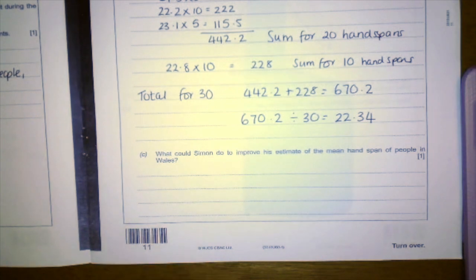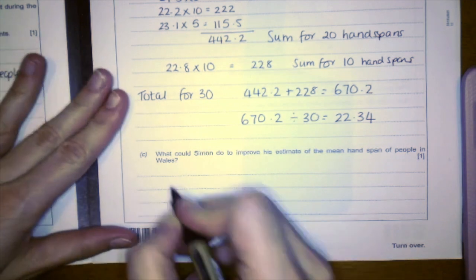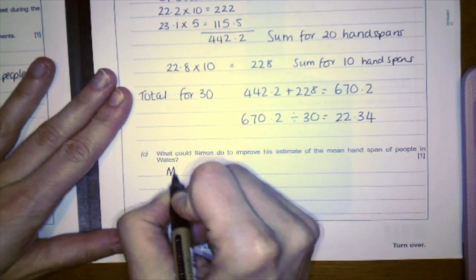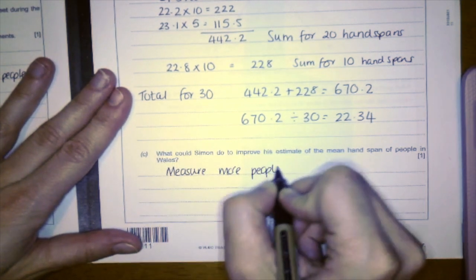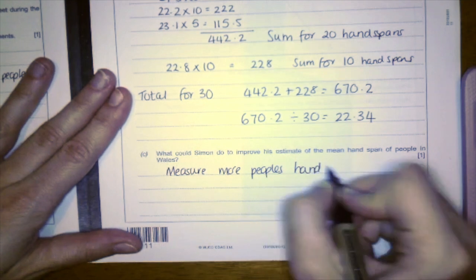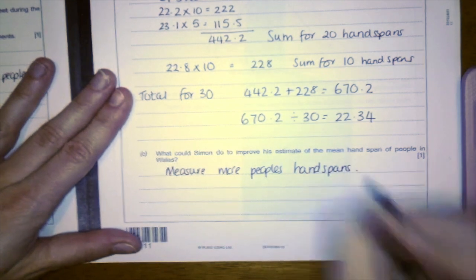For the last part, Part C: what could Simon do to improve his estimate of the mean handspan of people in Wales? Well, he's only asked 30 people, so he should ask more. So measure more people's handspans.